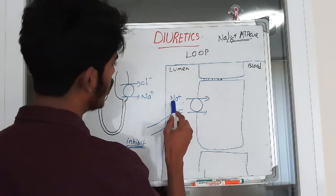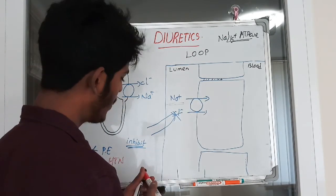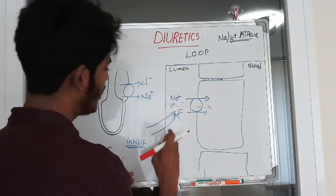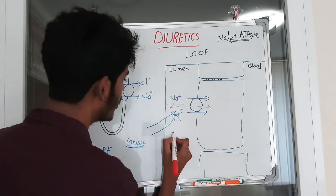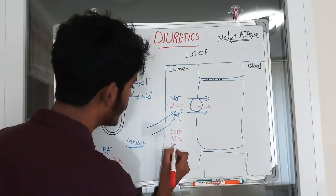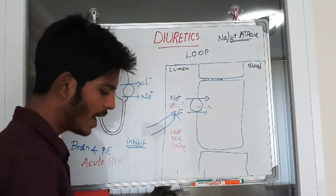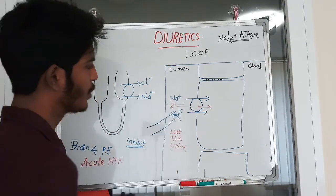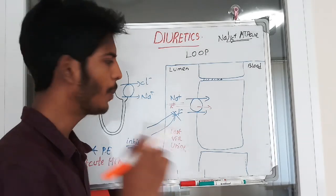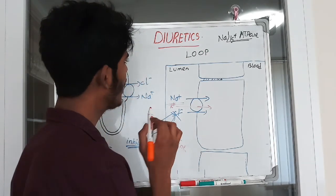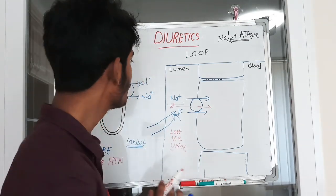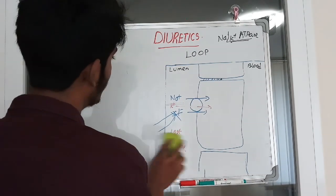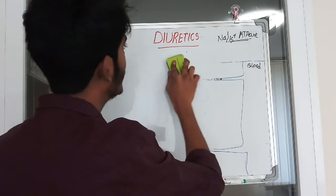Since sodium, chloride, and potassium are all not reabsorbed, they are lost via urine. This leads to hyponatremia from sodium loss, hypokalemia from potassium loss, and hypochloremia. These are the side effects of loop diuretics. Loop diuretics are available in both intravenous and tablet forms.